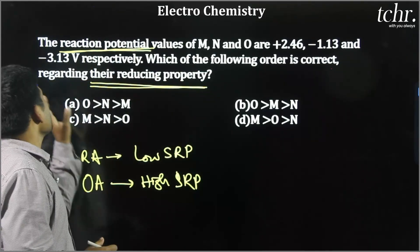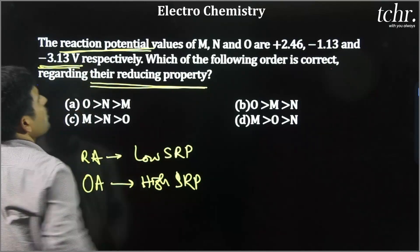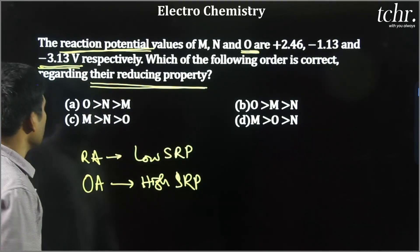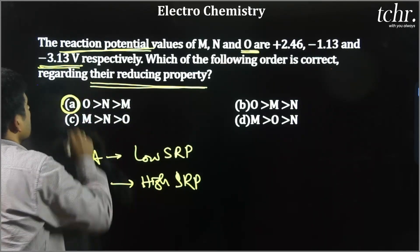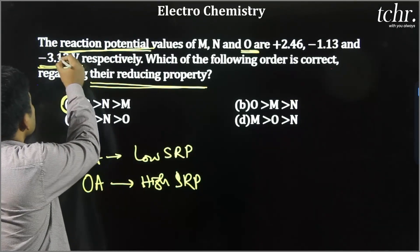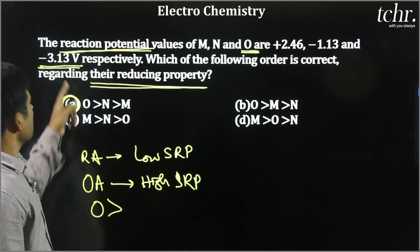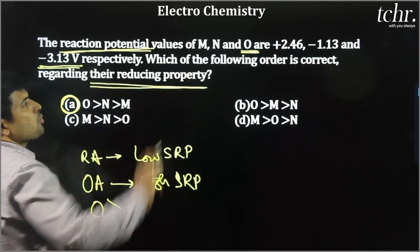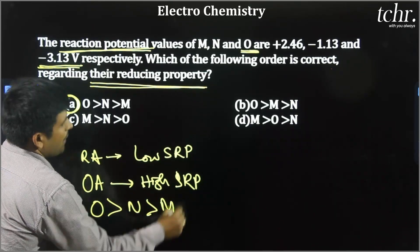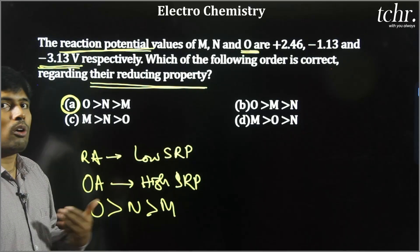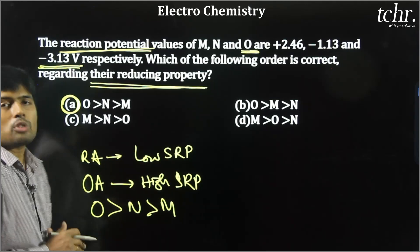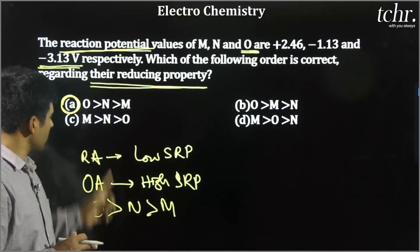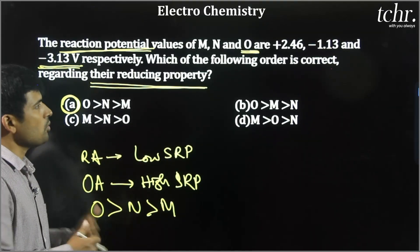With these values, -3.13 that is for O. So that will be a best reducing agent. We have answer option A because here -3.13, O has the highest reducing property because it has lowest standard reduction potential. Next is -1.13 that is N, then it is M because M has a positive reduction potential. Answer becomes option 3. We have to actually arrive at the answer and then mark only. That is how we solve it. Let us move on to next question.